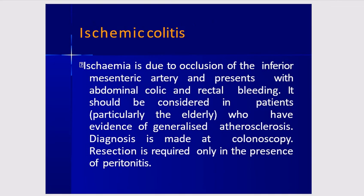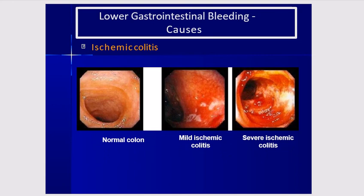Ischemic colitis is due to occlusion of the inferior mesenteric artery and presents with abdominal colic and rectal bleeding. It should be considered in elderly patients with generalized atherosclerosis. Diagnosis is made at colonoscopy, and resection is required only in the presence of peritonitis.